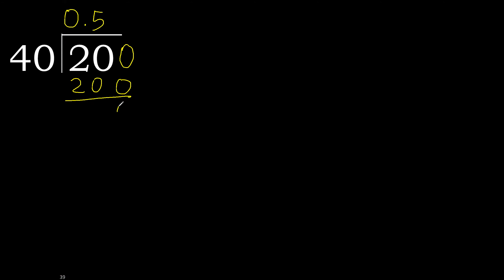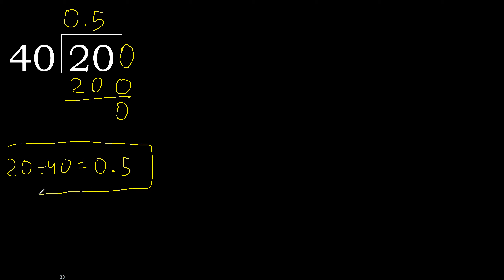Subtract — 0. Therefore finish it. 20 divided by 40 equals 0.5.